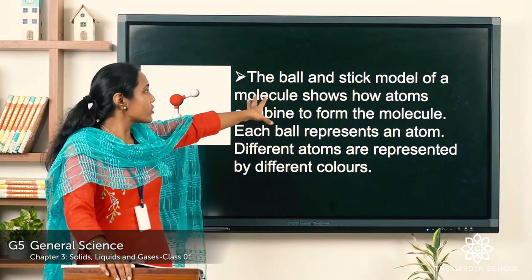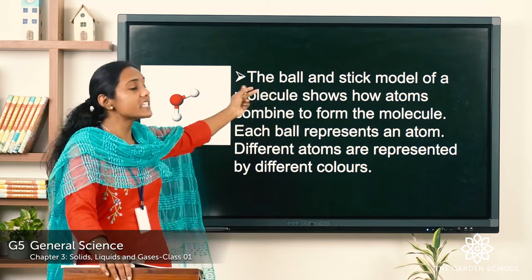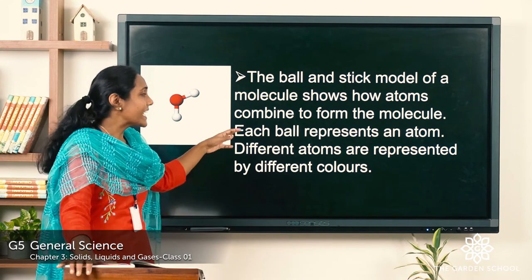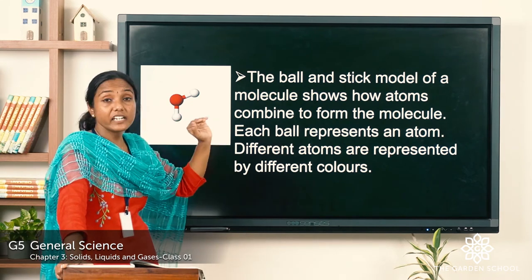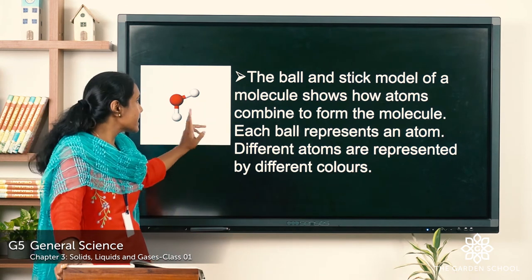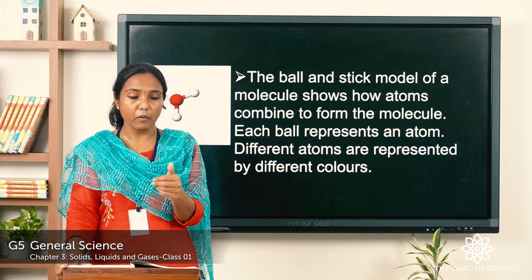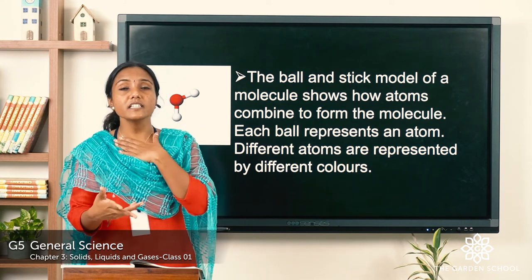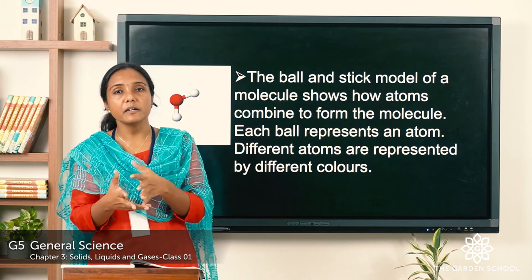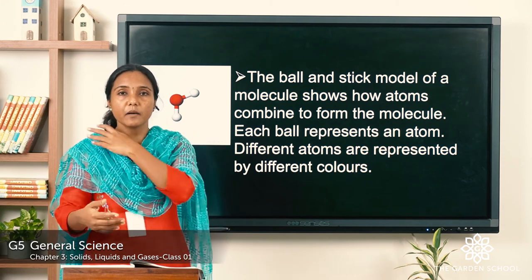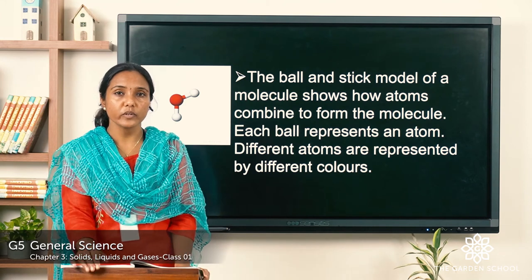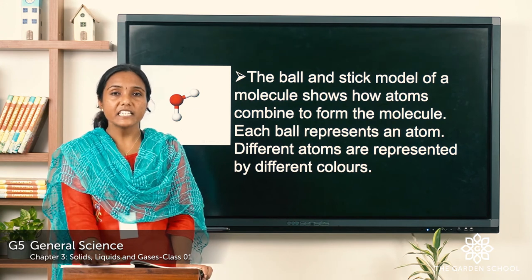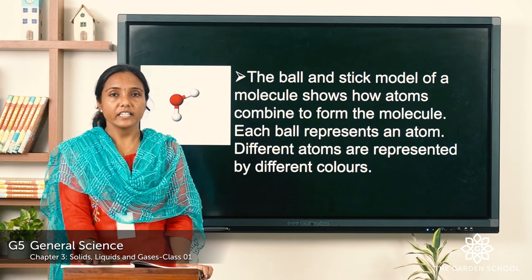The ball and stick model of molecules shows how atoms combine to form a molecule. Each ball represents an atom, and different atoms are represented in different colours, as you can see on the screen. In today's class we learnt what matter is and what it is made up of, what molecules are and what they are made up of, and we also learnt about atoms with a few examples. I want you to go through it and understand. We will meet in the next class with a new topic — bye!